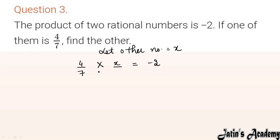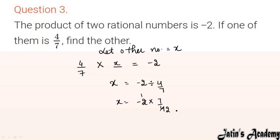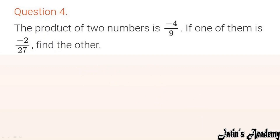x = minus 2 ÷ (4/7). Divide converts to multiply, next term takes reciprocal: 7/4. After simplification — 2 and 4 cancel — answer is minus 7/2. So the second rational number is minus 7/2.